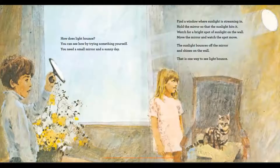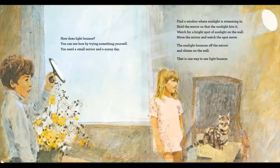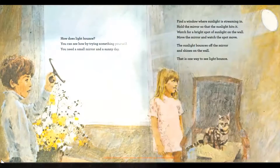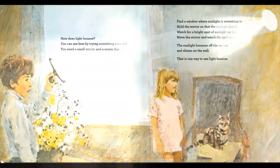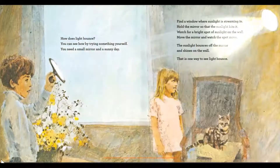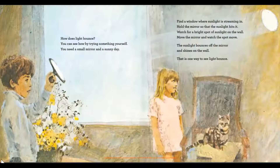How does light bounce? You can see how by trying something yourself. You need a small mirror and a sunny day. Find a window where sunlight is streaming in. Hold the mirror so that the sunlight hits it. Watch for a bright spot of sunlight on the wall. Move the mirror and watch the spot move. The sunlight bounces off the mirror and shines on the wall. That is one way to see light bounce.